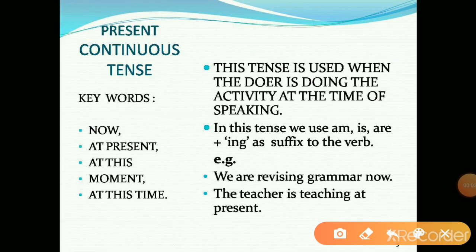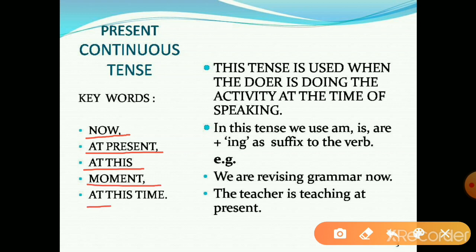Present continuous tense. This tense is used when the doer is doing the activity at the time of speaking. In this tense, we use am/is/are plus the verb with suffix -ing. For example: 'We are revising grammar now.' Second example: 'The teacher is teaching at present.' Its keywords are: now, at present, at this moment, at this time, etc.